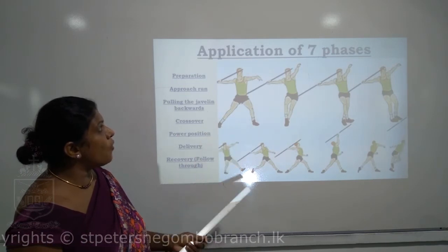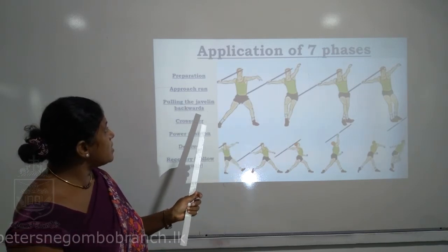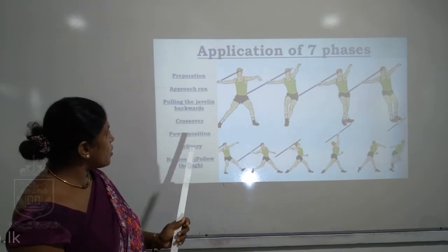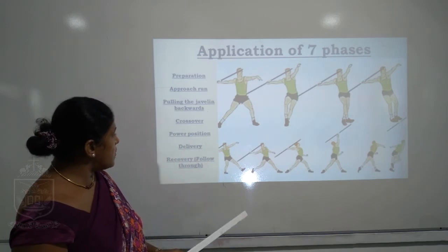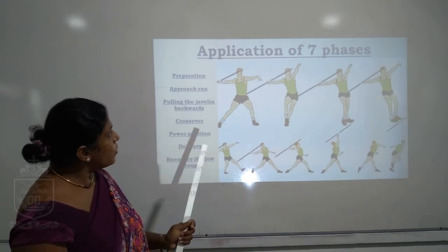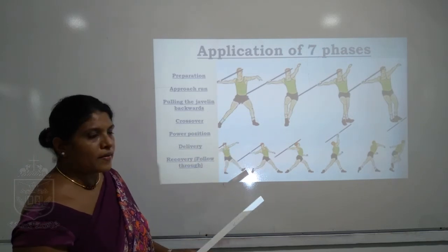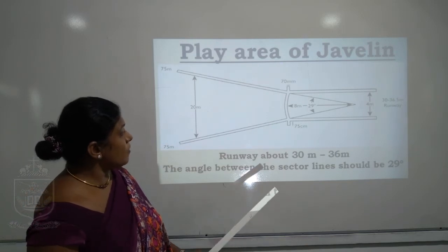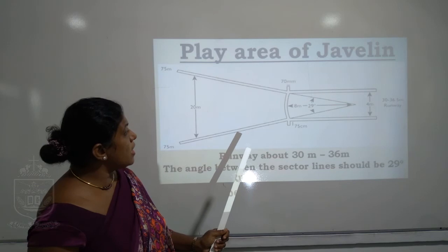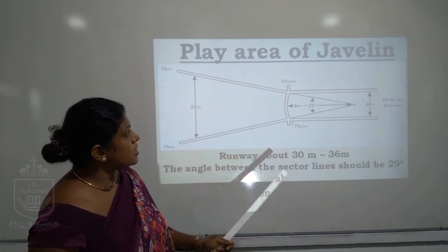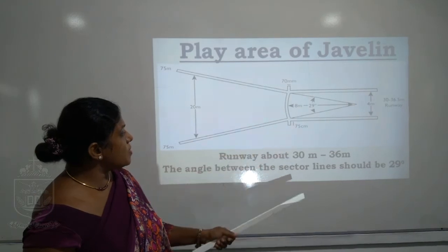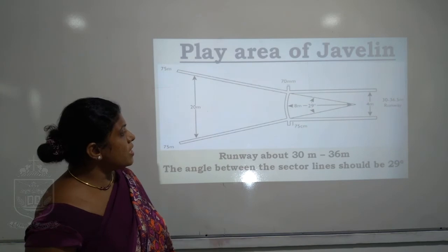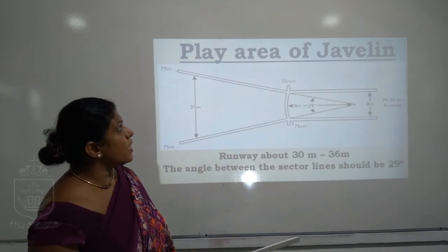Here you can see the application of all seven phases: preparation, approach run, putting the javelin backward, crossover, power positioning, delivery, and recovery or follow-through. All these steps are applied in sequence. The runway of the javelin play area is about 30 to 36 meters, and the angle between the sector lines is 29 degrees.